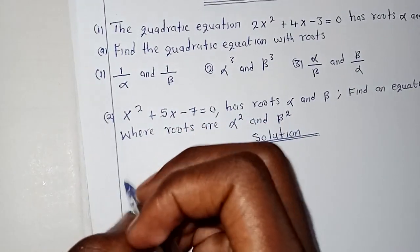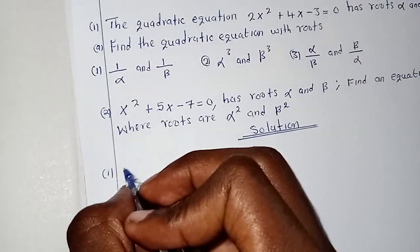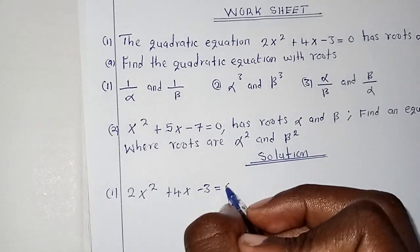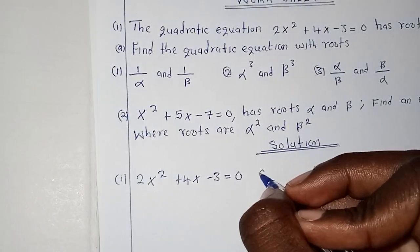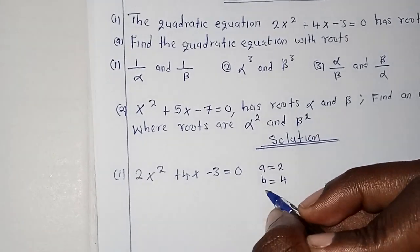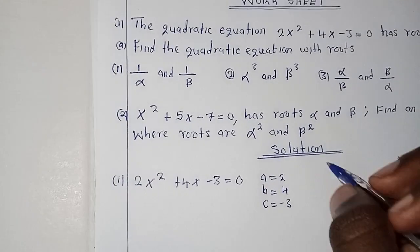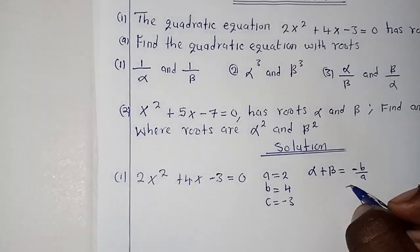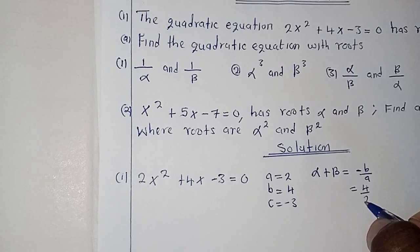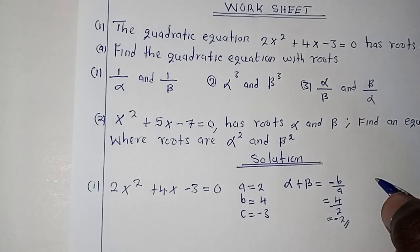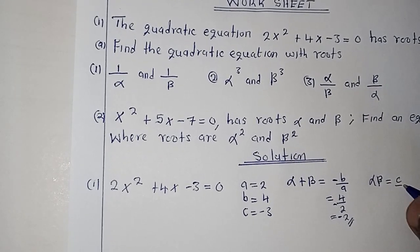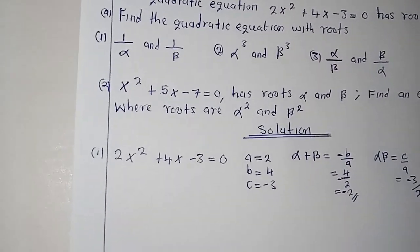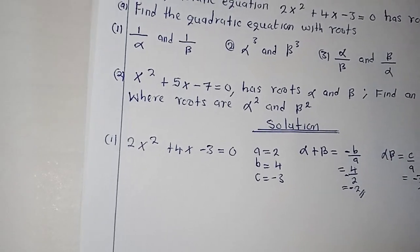First, we write the equation: 2x squared plus 4x minus 3 equals zero. We identify a equals 2, b equals 4, and c equals negative 3. The sum of roots is negative b over a, which is negative 4 over 2, giving us negative 2. The product of roots is c over a, which is negative 3 over 2.